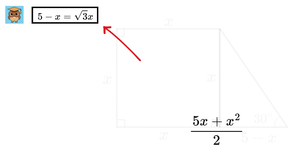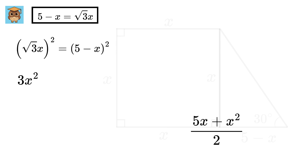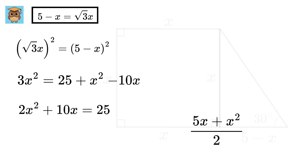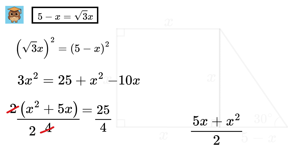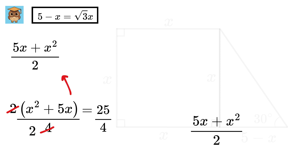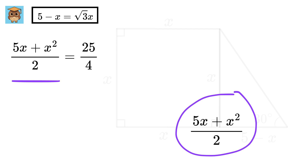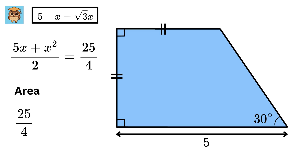So if you remember the part we boxed: if you square both sides of this equation, we get (root 3x) squared equals (5 minus x) squared. So we get 3x squared equals 25 plus x squared minus 10x. This gives us 2x squared plus 10x equals 25. If we divide by 4 on both sides, taking 2 as common and simplifying, we get 5x plus x squared by 2 equals 25 by 4. Oh, look — this is the same as the area of this trapezium! So the area will be 25 by 4.